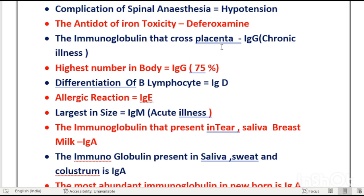IgG crosses the placenta — blood supply and nutrition supply happen through the placenta, and IgG crosses from the mother into the fetus. IgG levels increase in chronic illness such as cancer, tuberculosis. IgG is the highest in number in the body at 75% of all immunoglobulins.